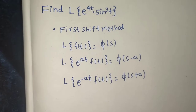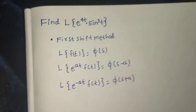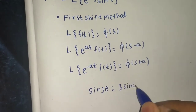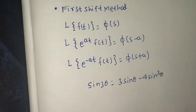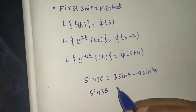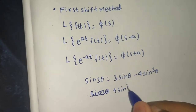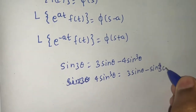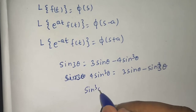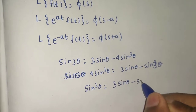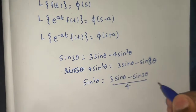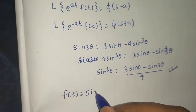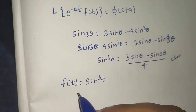Now here we have sin³(t). We know sin(3θ) = 3·sin(θ) − 4·sin³(θ). From here, 4·sin³(θ) = 3·sin(θ) − sin(3θ), so sin³(θ) = [3·sin(θ) − sin(3θ)] / 4. We will use this formula in this question, so let f(t) = sin³(t).